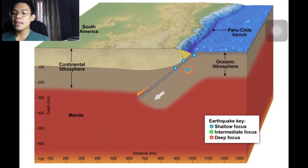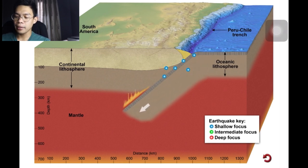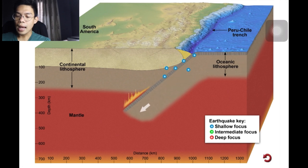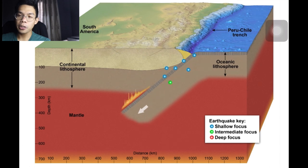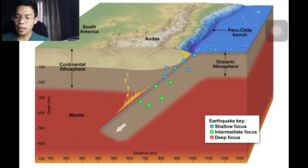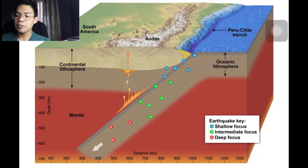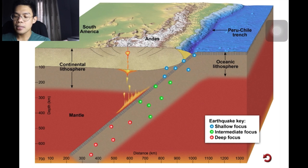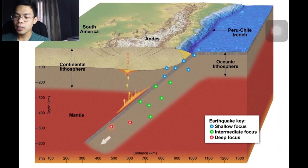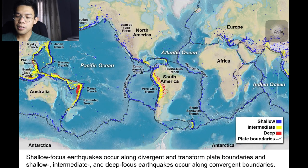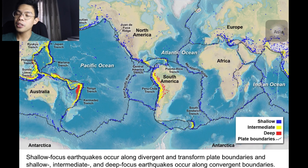At a convergent boundary, the descending slab of oceanic lithosphere is bent and interacts with the overriding continental lithosphere to generate shallow-focused earthquakes. As the cold, rigid slab descends farther into the asthenosphere, forces acting on it generate earthquakes at greater depth, called intermediate-focused earthquakes. Because the earthquakes occur within the rigid subducting plate, they provide a method of tracking the plate's descent. Shallow-focused earthquakes occur along divergent and transform plate boundaries, while shallow, intermediate, and deep-focused earthquakes occur along convergent boundaries — evidence supporting the theory of plate tectonics.